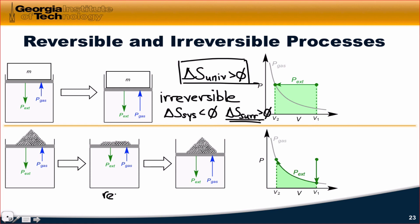For reversible processes, like using our infinitesimally small grains of sand, dS or delta S for the universe is equal to zero. At each point, we do cause a decrease in the entropy of the system.